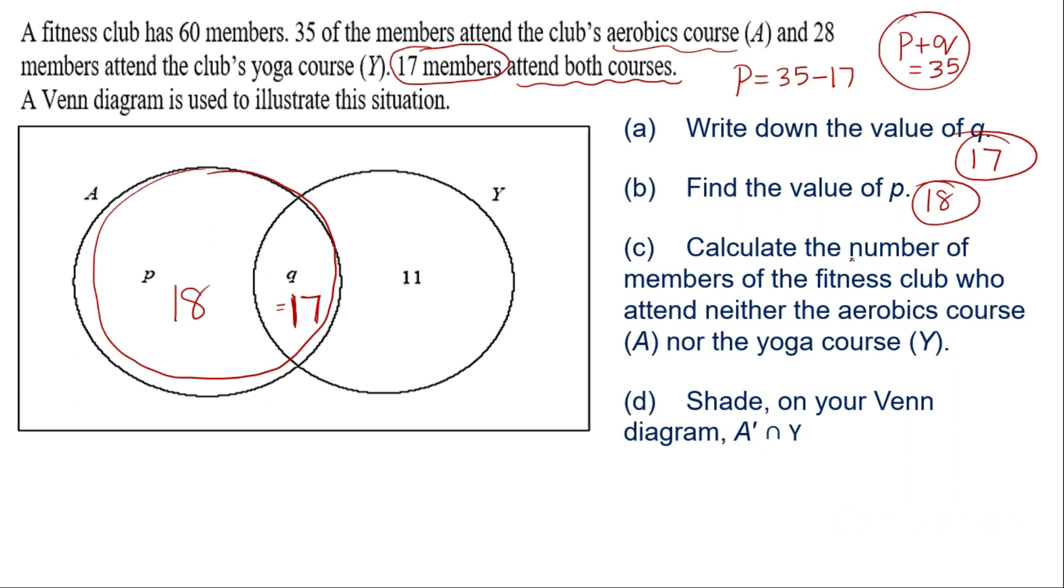Next part of the question. Calculate the number of members of the fitness club who attend neither aerobic course nor the yoga course. So they are not falling into both these circles. So which means they should be outside the circle. Now the question is how many. We have 60 members to be illustrated inside the Venn diagram. So let me just mark this as X.